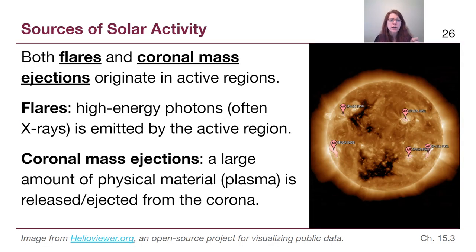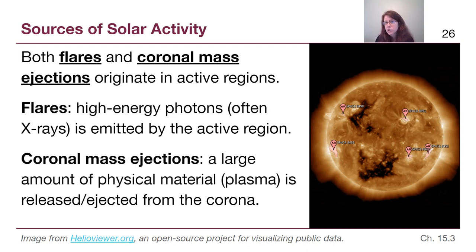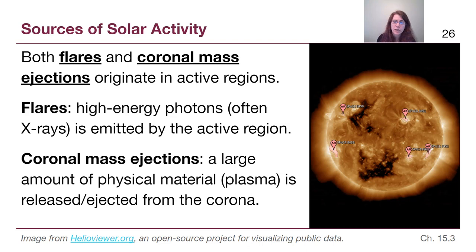Flares and coronal mass ejections are both pieces of solar activity that we will describe in the next video. They both originate in active regions. Flares are high-energy photons — usually X-rays — released by activity in active regions; they are electromagnetic radiation. Coronal mass ejections, by contrast, involve physical material — the plasma itself is sent away from the sun. When we have these active regions, indicated on a particular day during an active part of the cycle, these are places where we are likely to see flares and coronal mass ejections.